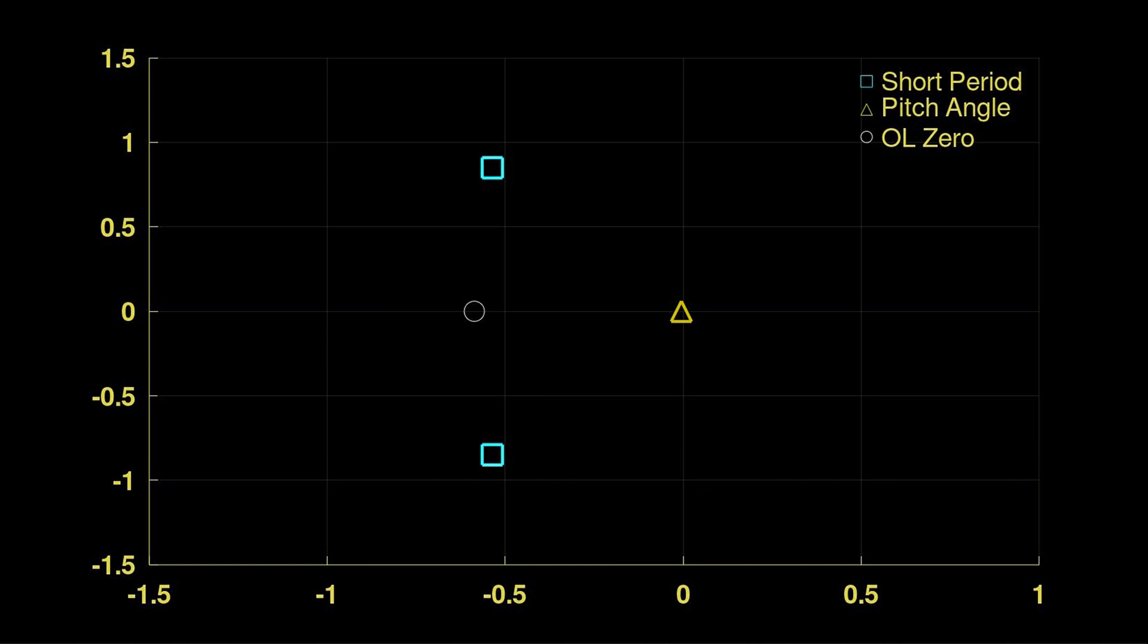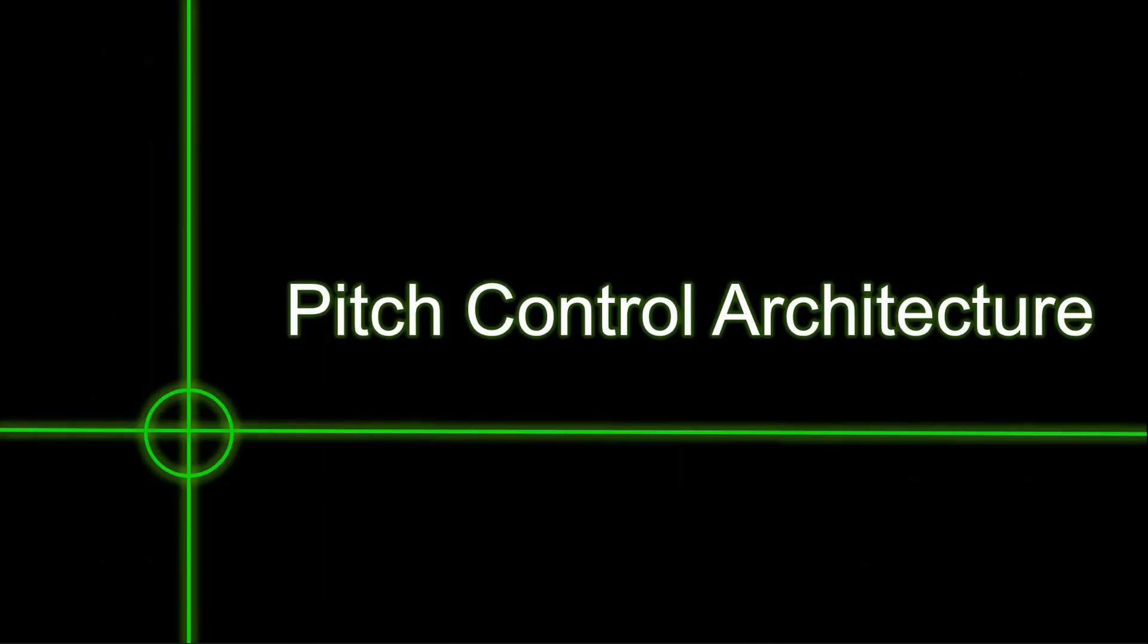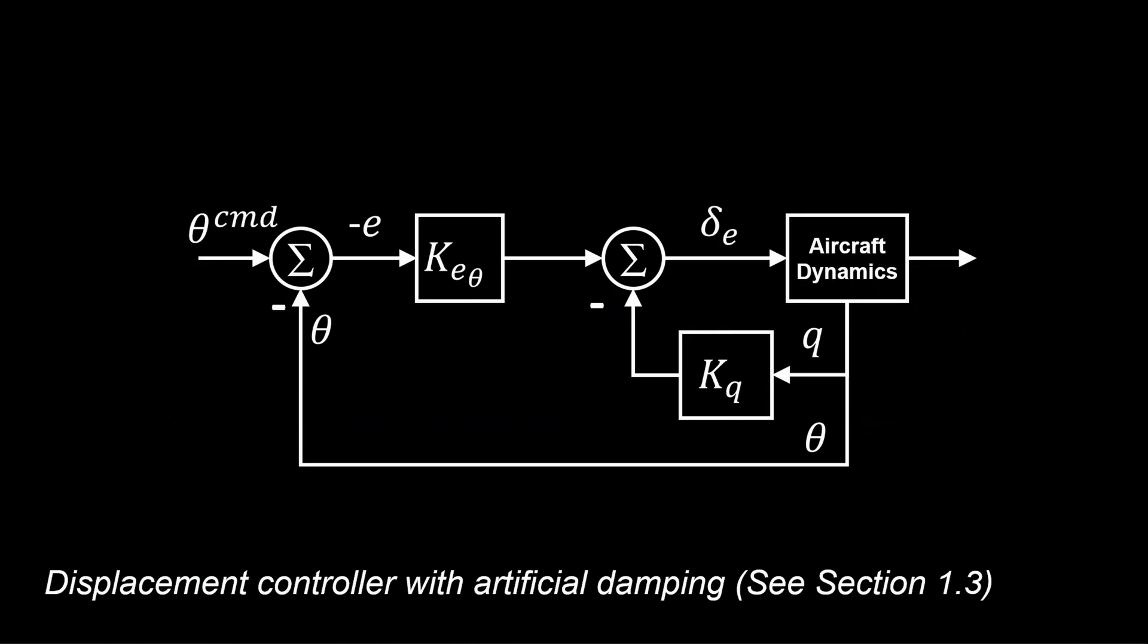Now, we need to close the loop with a pitch control system. We apply the displacement controller with artificial damping as covered in section 1.3.